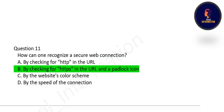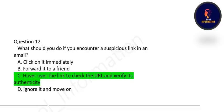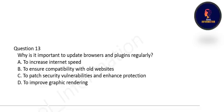Next question: what should you do if you encounter a suspicious link in an email? Options are: click on it immediately, forward it to a friend, or hover over the link to check the URL and verify its authenticity. The correct option is C — hover over the link to check the URL and verify its authenticity before clicking.